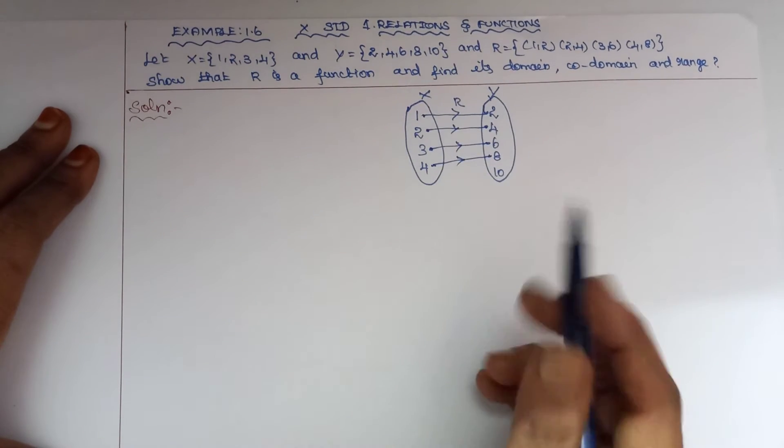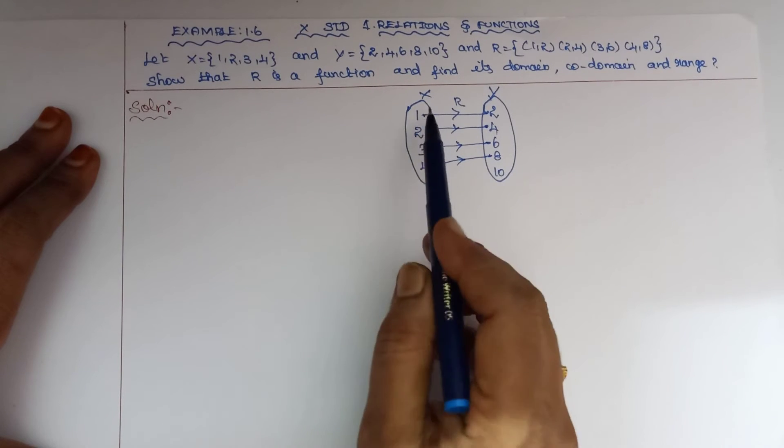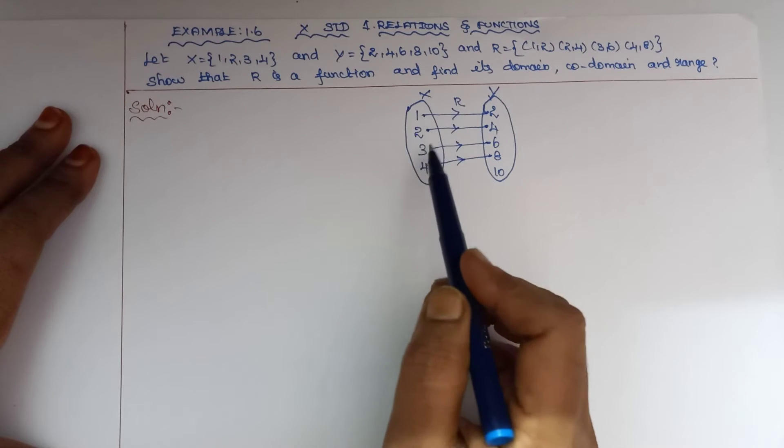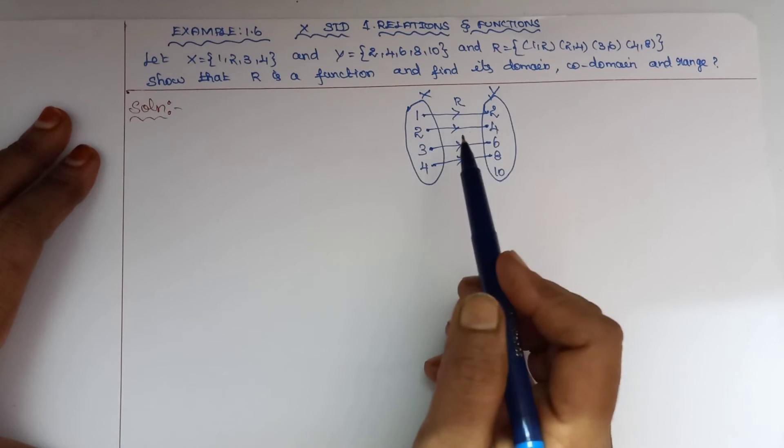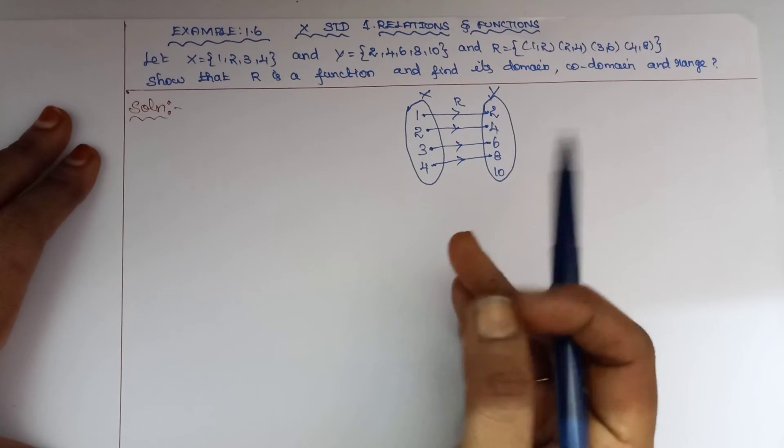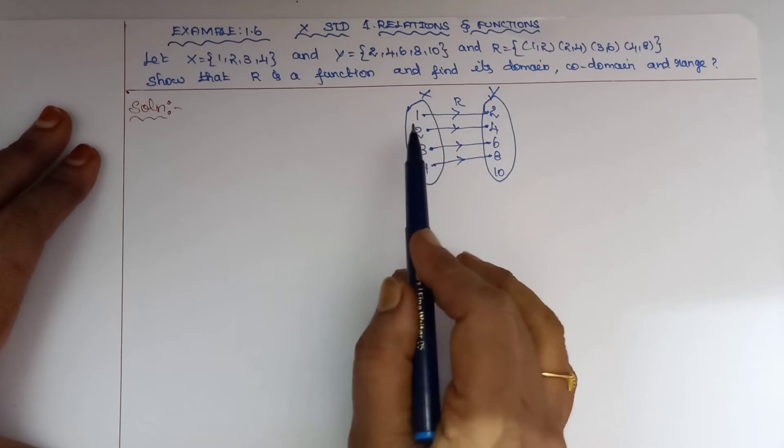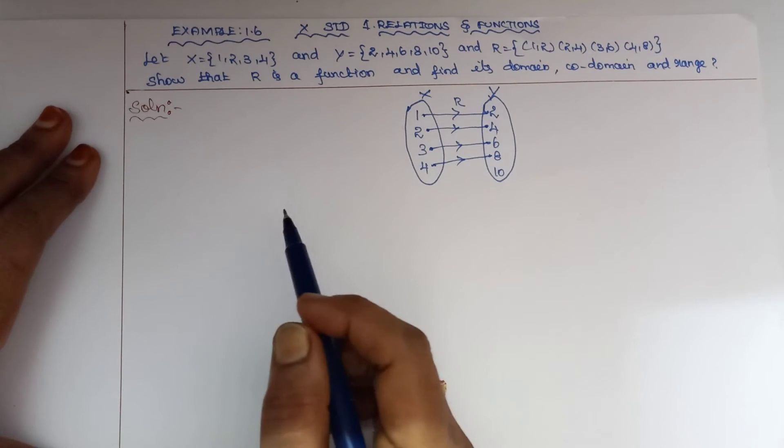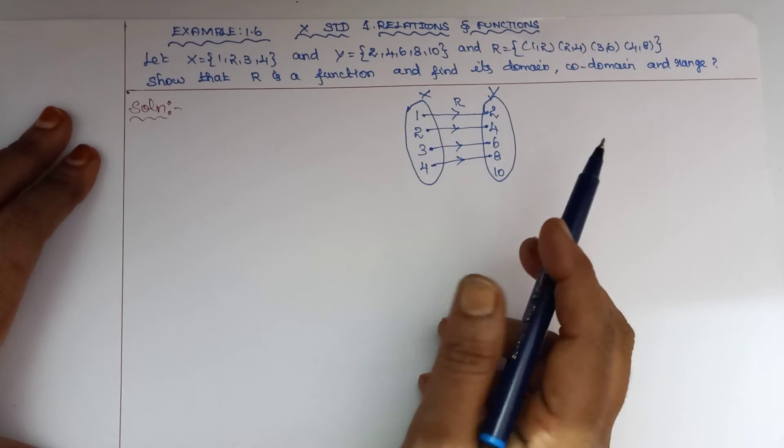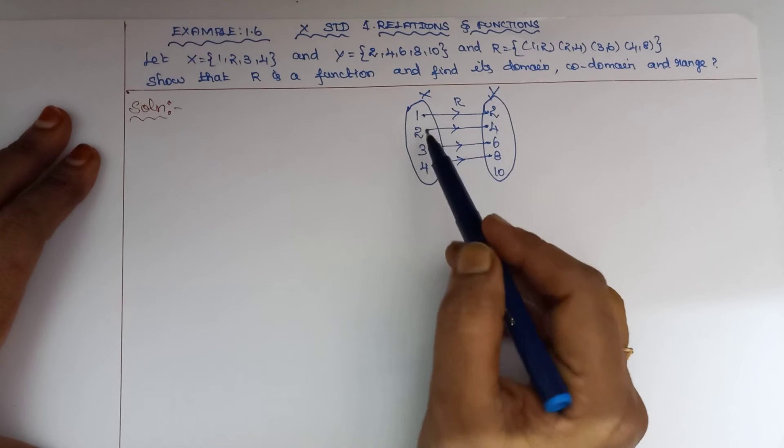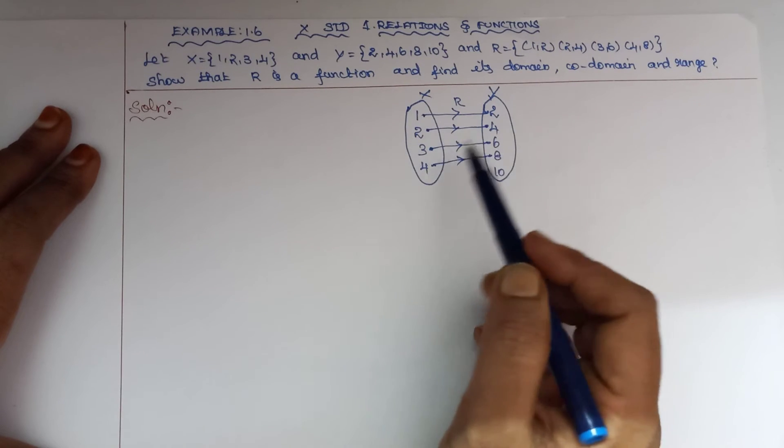To prove this is a function, every element in the first set, that is the domain, must have an image. And the image must be unique, meaning each element should map to only one image in the second set.